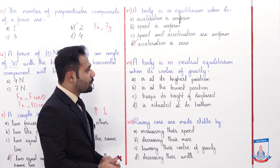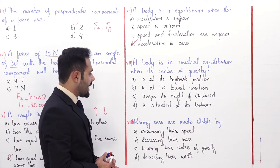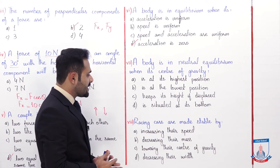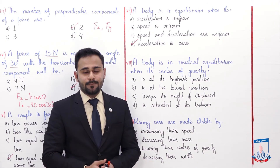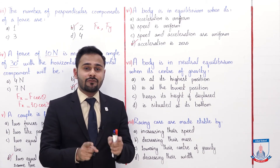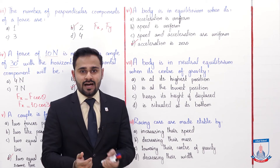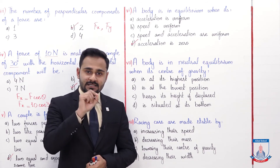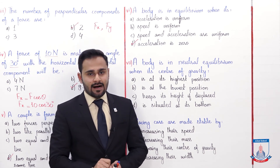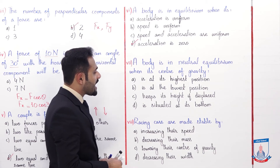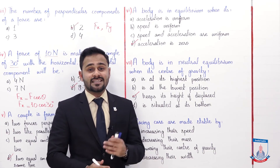MCQ number seven: A body is in neutral equilibrium when its center of gravity — A: is at its highest position, B: is at the lowest position, C: keeps its height if displaced, D: is situated at its bottom. The correct option is C — the center of gravity keeps its height if displaced, meaning if the body is displaced it remains at the same height.